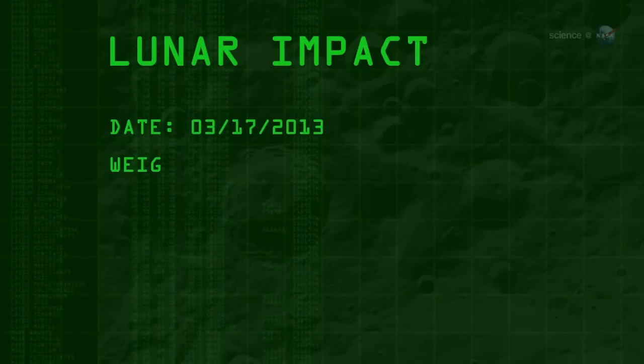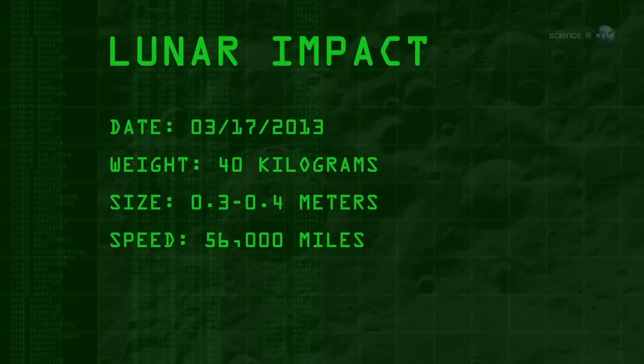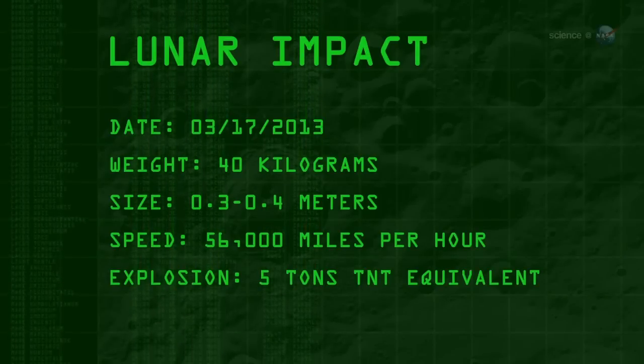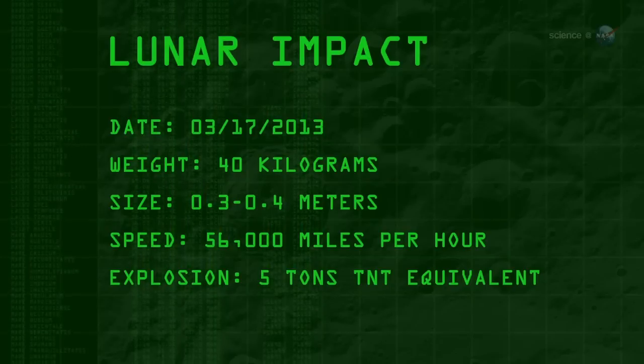The 40-kilogram meteoroid, measuring 0.3 to 0.4 meters wide, hit the Moon traveling 56,000 miles per hour. The resulting explosion packed as much punch as five tons of TNT.